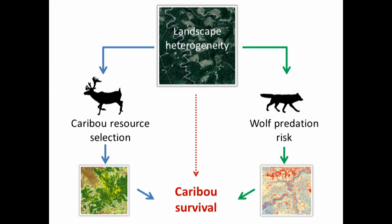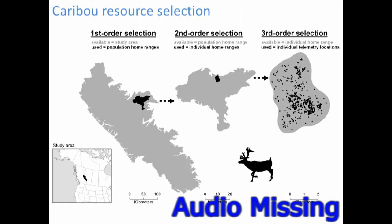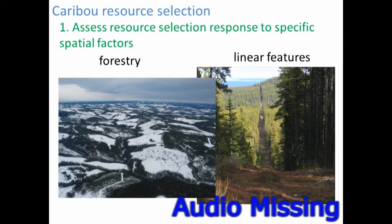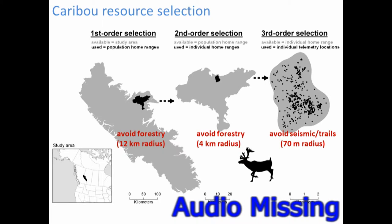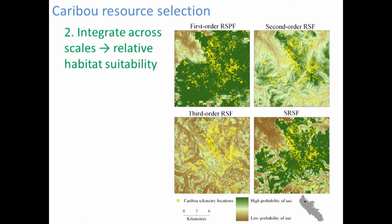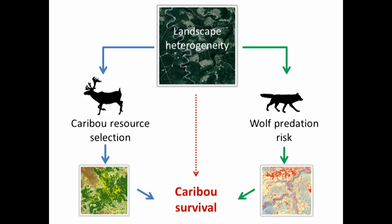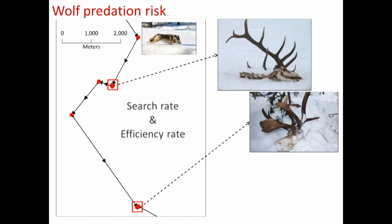I've been working on assessing how caribou resource selection varies with landscape variation and how predator selection changes as well — looking at both resource selection and predation risk with respect to spatial variation. The caribou data was collected by many partners and includes over 200 individually GPS-collared caribou. We're now working with GPS-collared wolf data in the same study area.